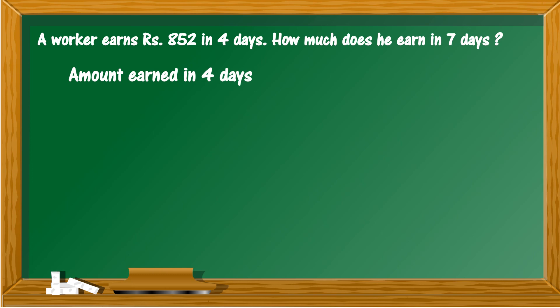One more example. A worker earns rupees 852 in four days. How much does he earn in seven days? First, use division. Amount earned in four days is rupees 852, therefore amount earned in one day is 852 divided by 4, equal to 213.